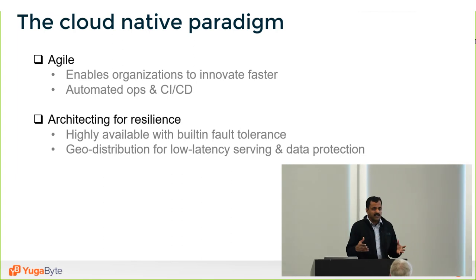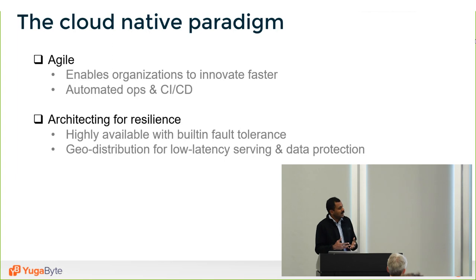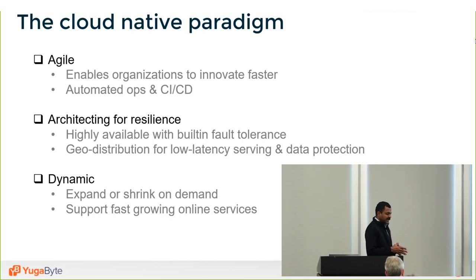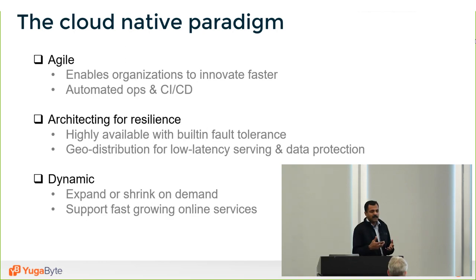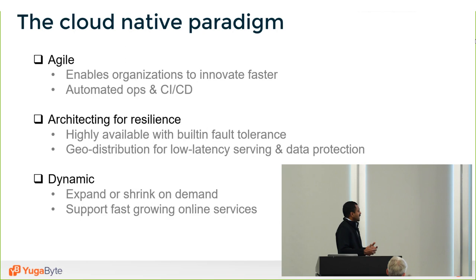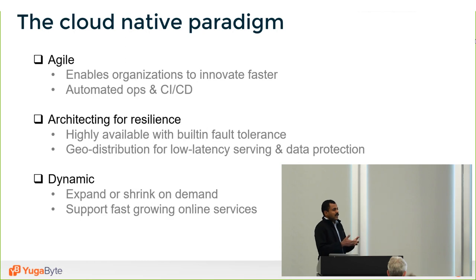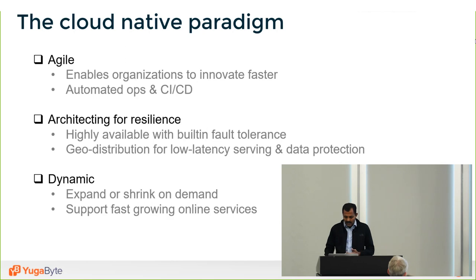These apps need global distribution. They serve a global user base and need global distribution for low-latency serving requirements as well as data protection. A third aspect is the very dynamic nature of these services — you want infrastructure that can scale up and down easily on demand with very low operational touch, bursting when needed and shrinking otherwise.